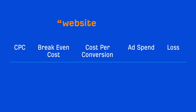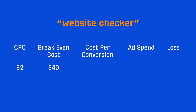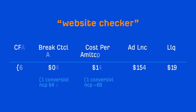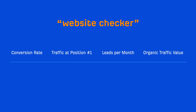Let's say that the query 'website checker' had an average CPC of $2 and your breakeven cost was $40. That means you need to convert one visitor for every 20 clicks to breakeven. If your cost per conversion was $50, then from an ads perspective, you're losing $250 for every $1,000 spent. So let's do a bit of reverse engineering. With this information, you know that ranking for the query 'website checker' will lead to conversions, and you'll need around 25 clicks to get one conversion.